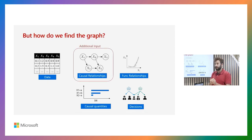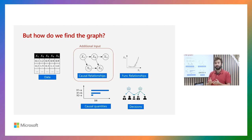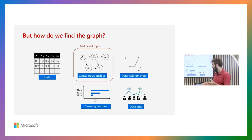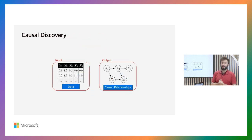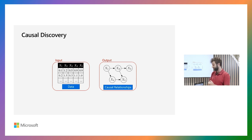In a lot of causality work, we can do causal effect estimation, but that assumes we have a graph given. The question is: how do we find this graph, and how do we move forward from there? This is what we do in causal discovery, and this is one of the main building blocks of the work we've been doing.